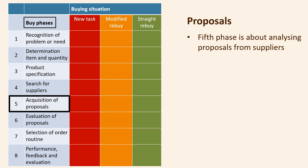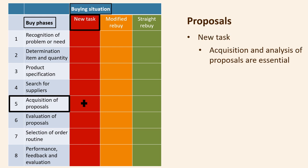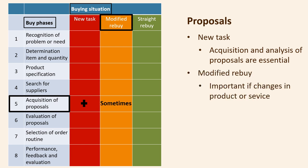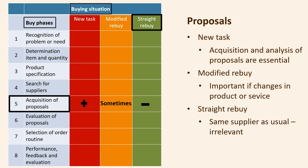The fifth phase, acquisition and initial analysis of proposals and samples from suppliers, is about obtaining and analysing offers. When the purchase is a new task, very detailed specifications must be prepared for potential suppliers, and a preliminary analysis of proposals and samples undertaken. In the case of a modified rebuy, this is only meaningful if there have been changes to the product. For a straight rebuy situation, you use the same supplier as usual, which makes acquisition of proposals irrelevant.